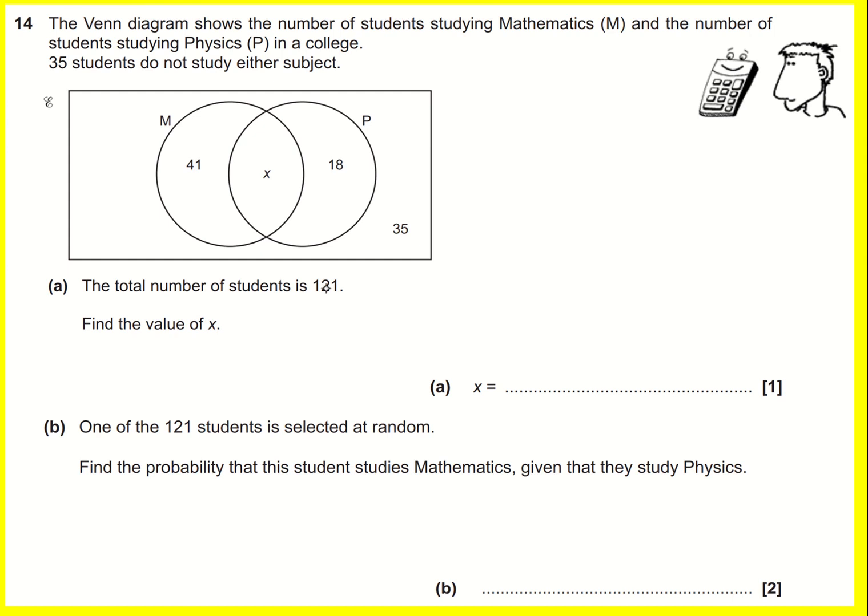Right, so the total number of students is 121. That basically means that this plus this plus this plus this equals 121.